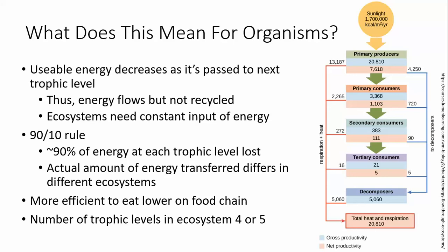So what does this mean for organisms? At each trophic level — each level where an organism eats in an ecosystem — you lose some energy as heat. Only about 10% of the energy in an ecosystem is available to be passed on to the next trophic level. The usable energy decreases as it's passed to the next trophic level, because you can't destroy energy, but you can have energy that's no longer usable.